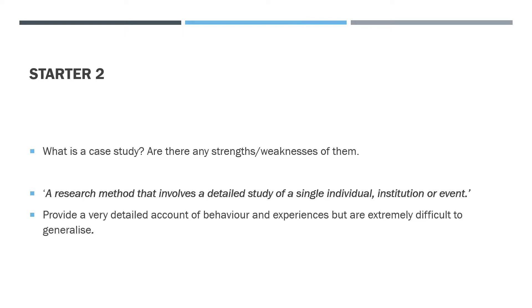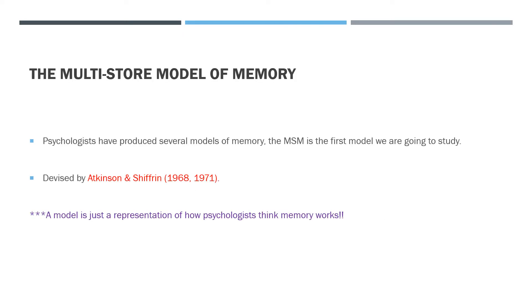Let's get on to our models of memory. Models of memory just means theories. If you remember the cognitive approach, they make inferences, because we can't physically see a model inside someone's brain even if we do a brain scan — it's not physically visible, but you can see which part of the brain is active at certain times. There are different models of memory because it's a representation of how psychologists think memory works, and some people will disagree with others. The first one we're going to do is called the multi-store model of memory, by Atkinson and Shiffrin, originally 1968, revised 1971.